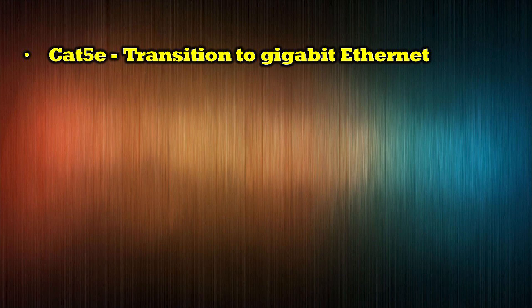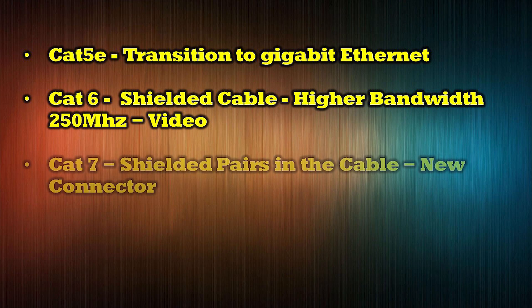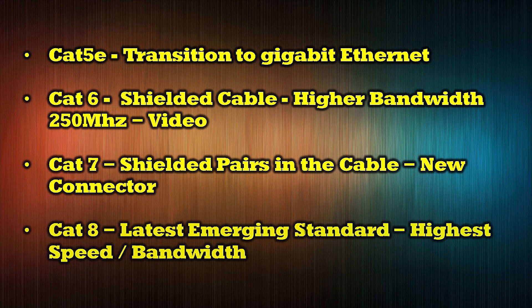In the evolution of cable development, there were four major technical improvements that allow modern cables to carry incredibly fast data with massive bandwidth. Category 5e enabled the transition to Gigabit Ethernet for both commercial and home networks. Category 6 introduced advanced shielding with a higher 250 megahertz bandwidth and video capabilities. Category 7 shielded not only the cable but also the individual wire pairs, enabling even higher speeds. Category 8 is the latest standard, supporting the highest speeds and biggest bandwidth available today.